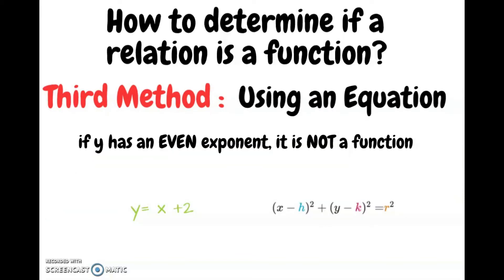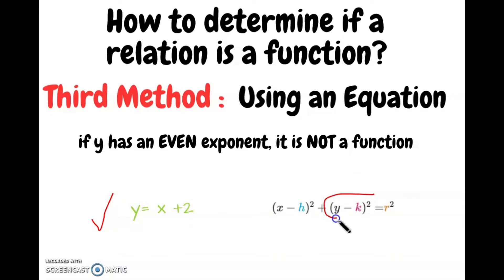The third and final method of determining whether a relation is a function is to use the equation of the relation. If y has an even exponent, then the relation is not a function. On the left, y does not have an even exponent, making it a function. However on the right, if we expand the brackets, y has an even exponent of two, making it not a function.